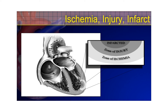As an infarction becomes worse, the zone of infarction enlarges, and so do the surrounding zones of injury and ischemia — it's not a steady state. Once the infarction reaches the epicardial layer, we call that a transmural infarction — the worst kind — when the infarction goes all the way from the endocardium to the epicardium.